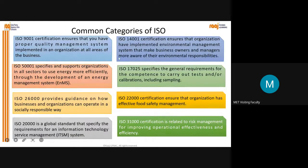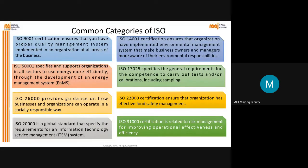There are some common categories of ISO standards. As mentioned, there are more than 24,000 standards falling under different categories. The 9000 series - some people refer to it as '9K' - ISO 9001 certification ensures that you have a proper Quality Management System (QMS) implemented in an organization across all areas of the business. ISO 9001 talks about building a quality management system which helps your organization to have better visibility in the market.